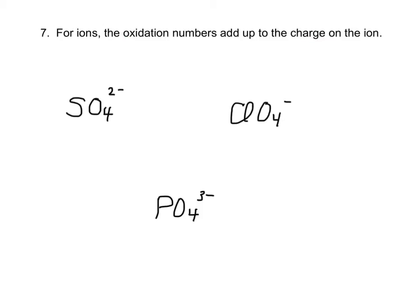Now, when I have an ion, like our polyatomic ions, the oxidation numbers have to add up to the charge on the atom. So here, oxygen is -2. So I've got a -8. And the whole thing has to equal -2, because that's the charge. So sulfur must be +6.